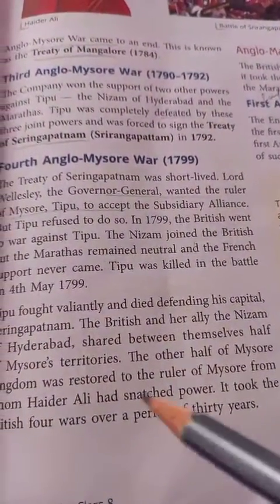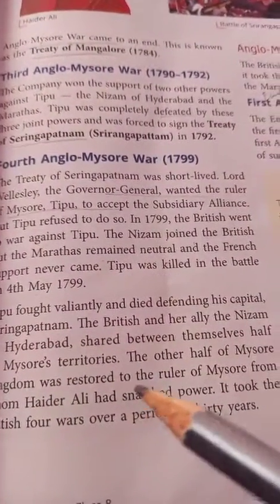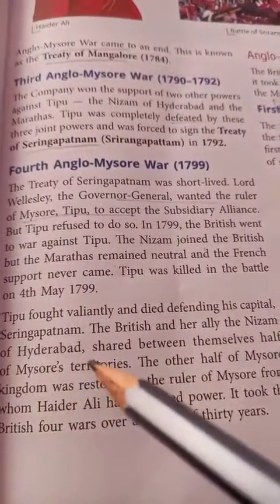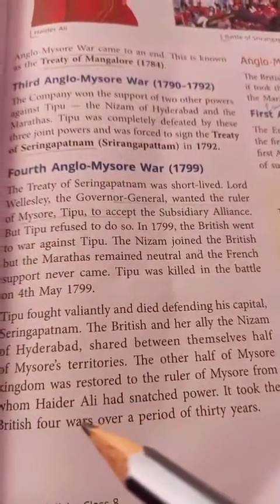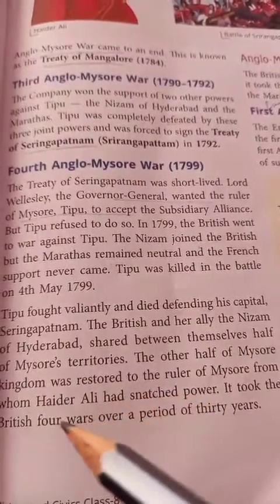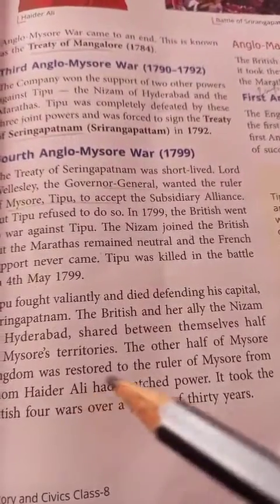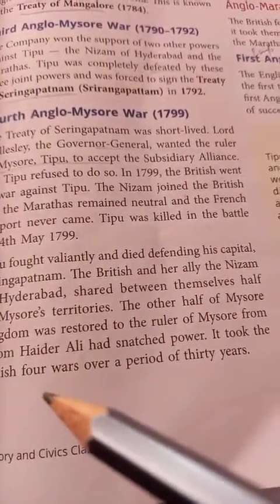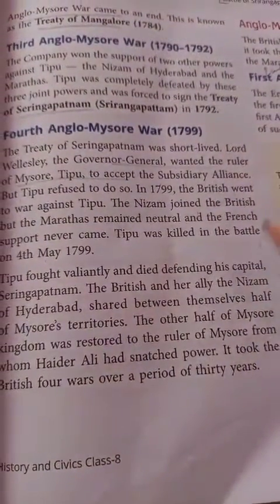Tipu was killed in the battle. He fought bravely and died defending his capital, Seringapatam. The British and their ally, the Nizam of Hyderabad, shared between themselves half of Mysore's territory. So it took the British four wars over a period of 30 years before they could control Mysore.